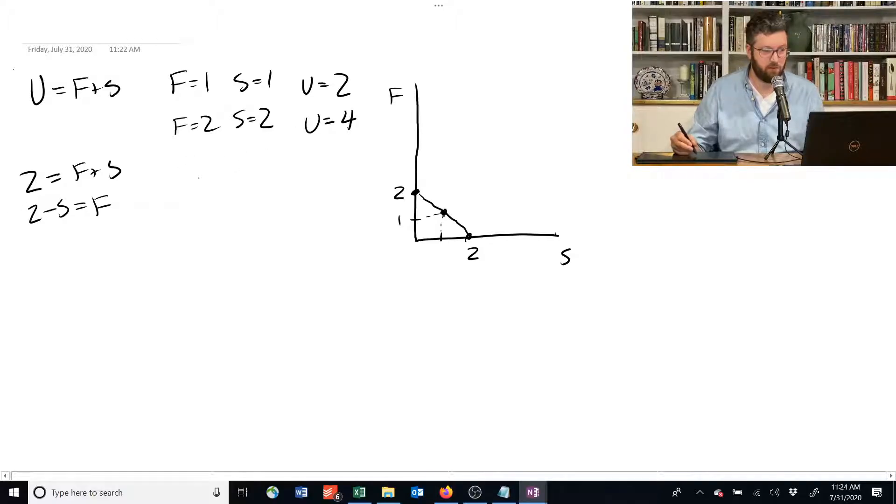For the next one, we plug in 4, solve for f, and we get this. If you have 2 of each, you're on the same indifference curve—you're indifferent.